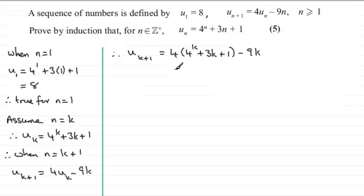Now if we expand the bracket here, 4 times 4 to the power k, add the powers here—that's 4^1 times 4^k—so you end up with 4^{k+1}. And then we've got 4 times 3k which is 12k, and then 4 times 1 which is 4, and then we've got the minus 9k.